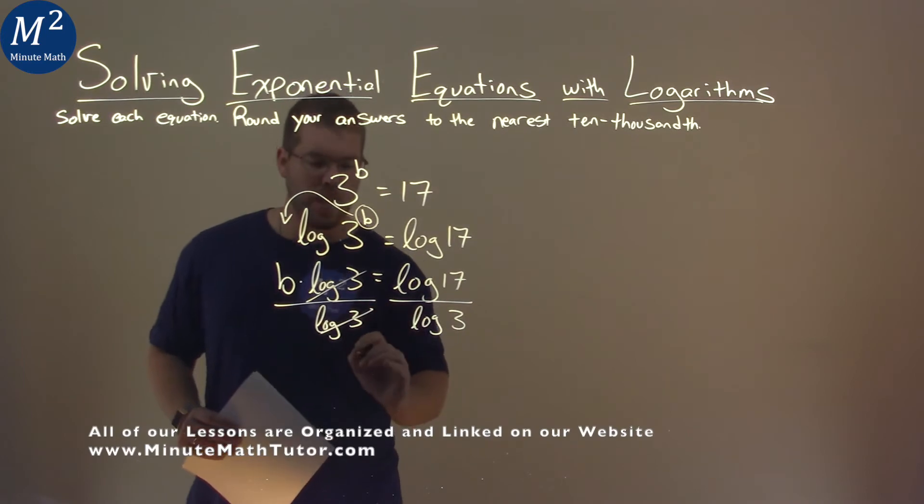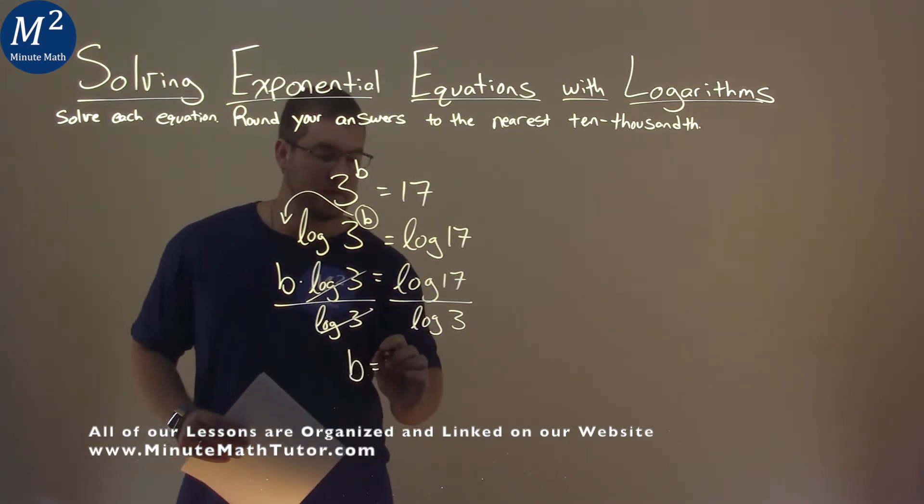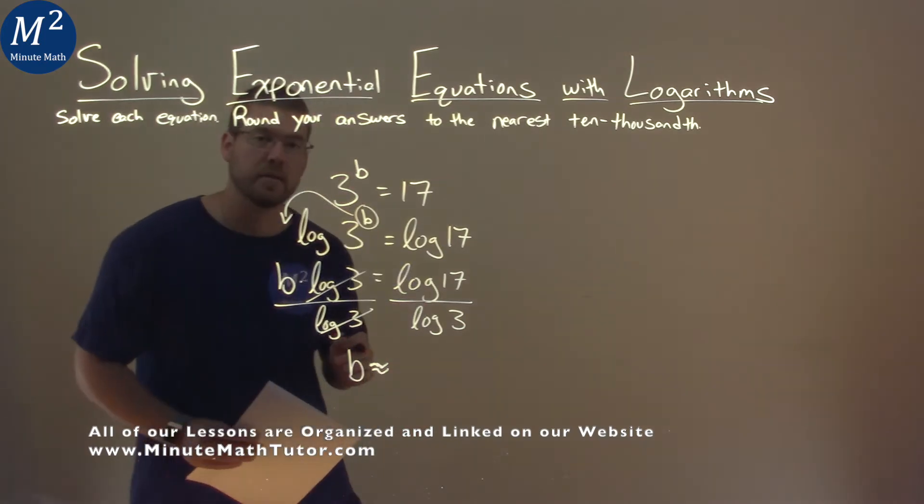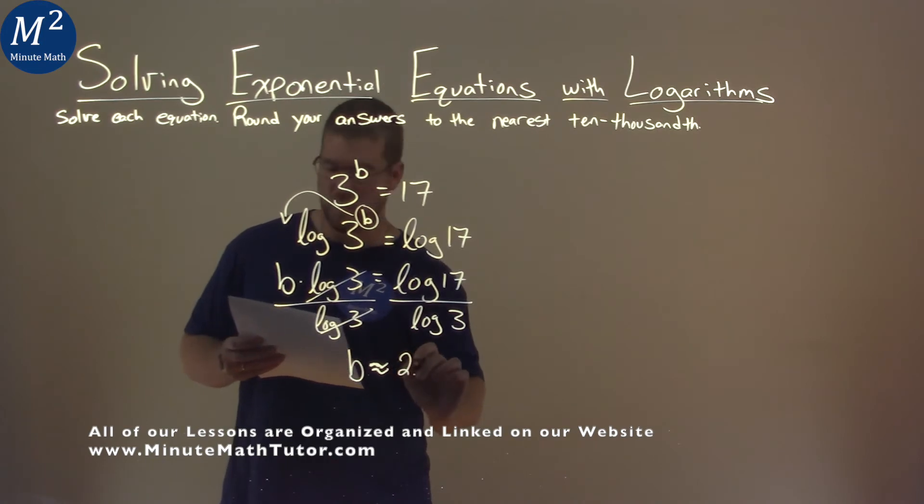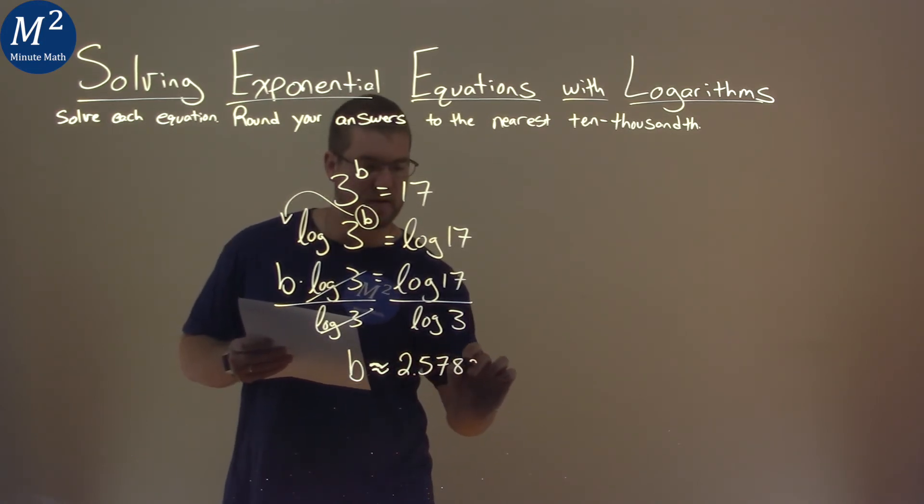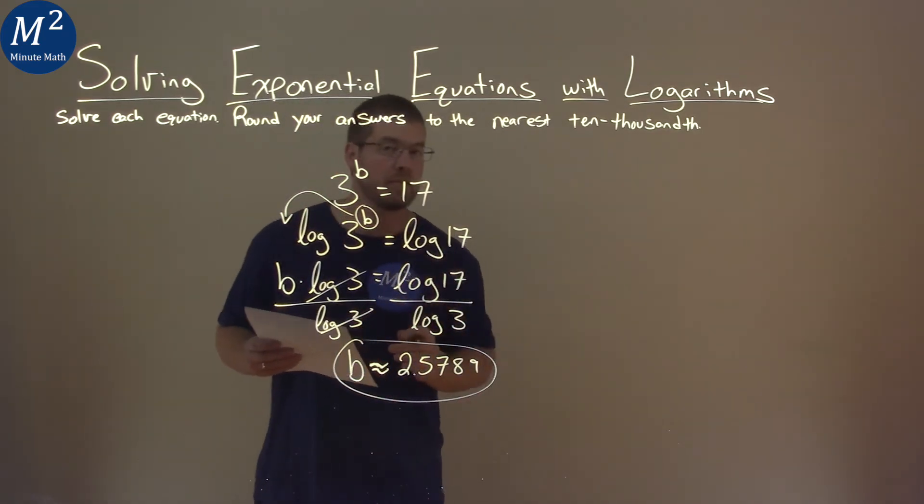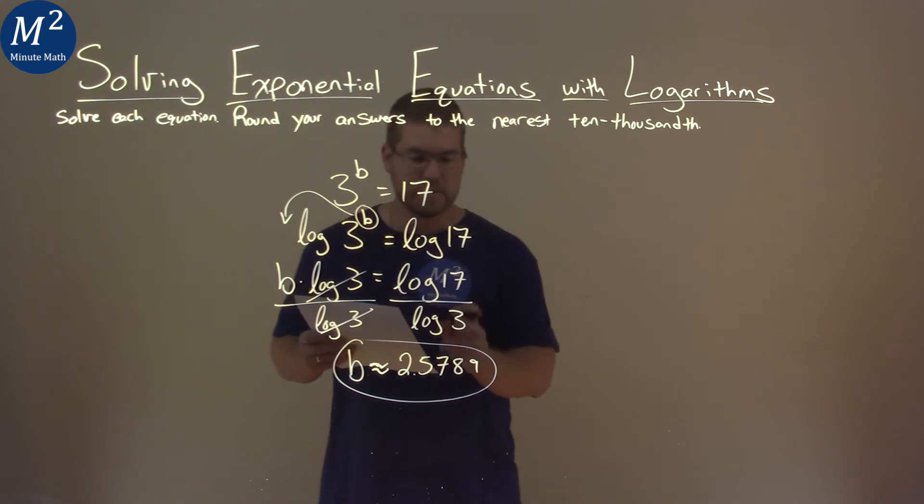The 3 is cancelled. And we're left with b here is equal to, and it's going to be approximate because we're going to round this. We use our calculator, log of 17 divided by the log of 3 comes out to be 2.5789 rounded. And so our final answer is b is approximately 2.5789.